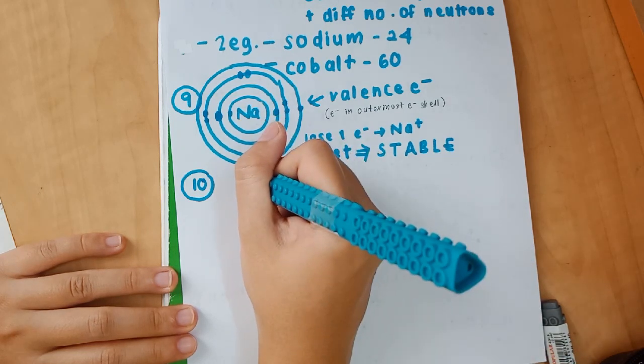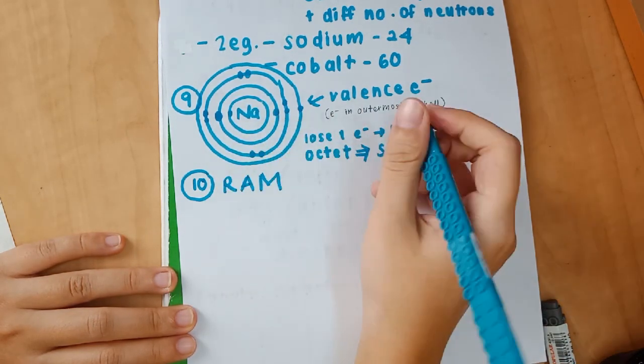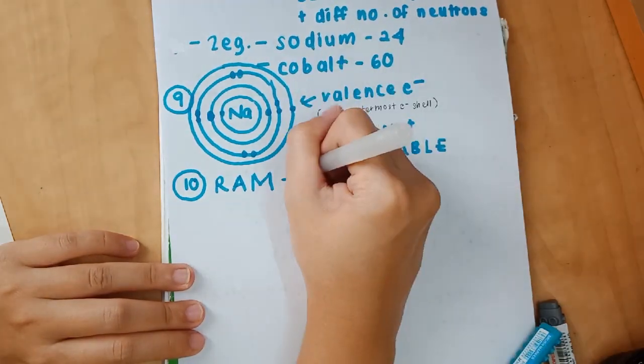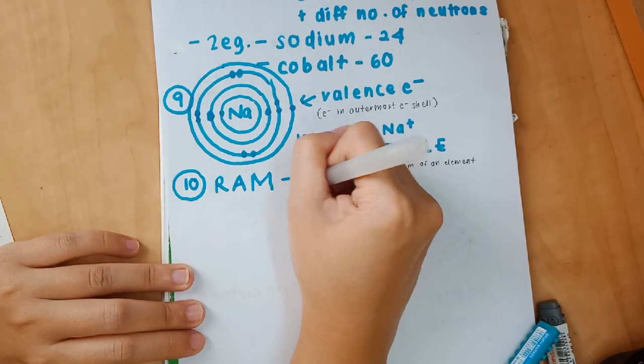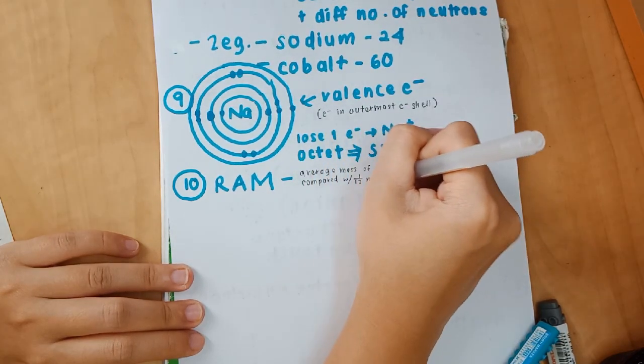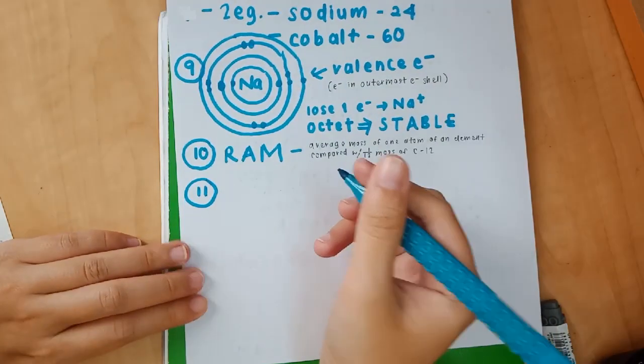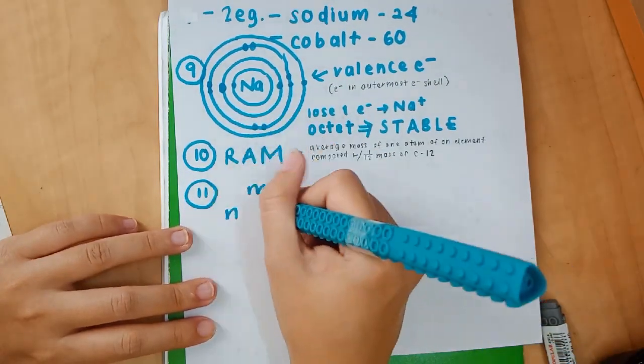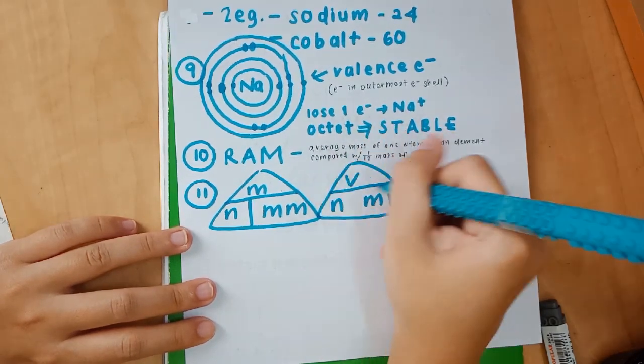Number 10 is RAM, relative atomic mass. The definition of RAM is another frequently asked question: average mass of one atom of an element compared with 1/12 times the mass of carbon-12. Take note of that.